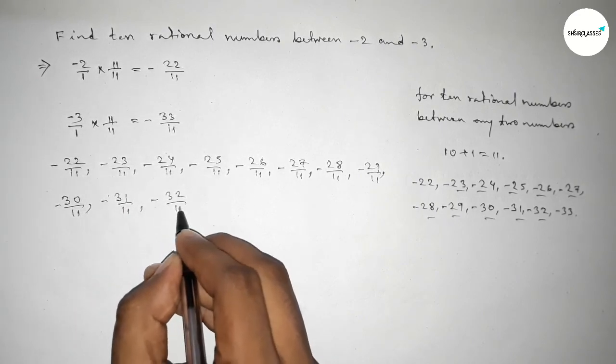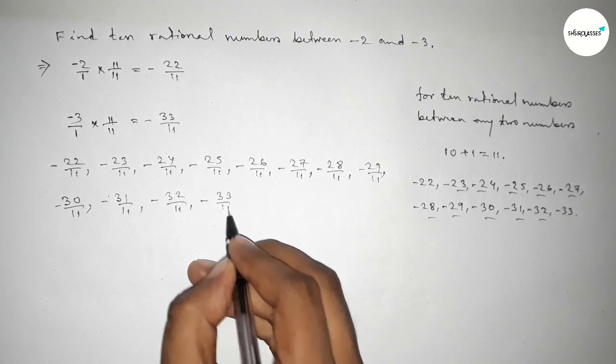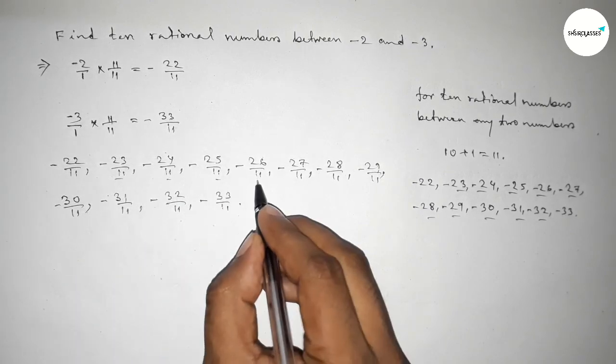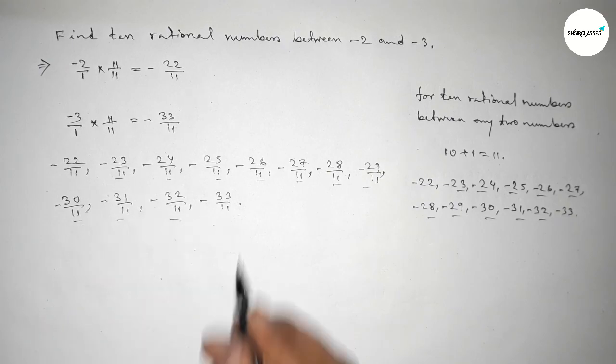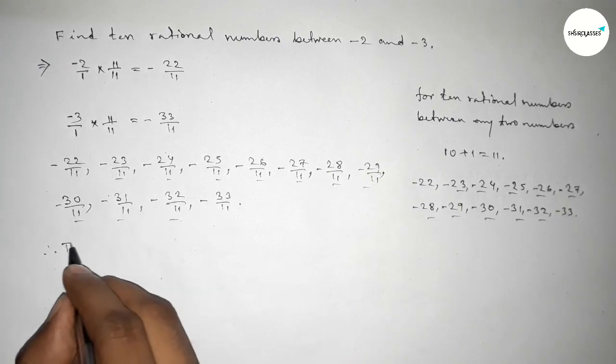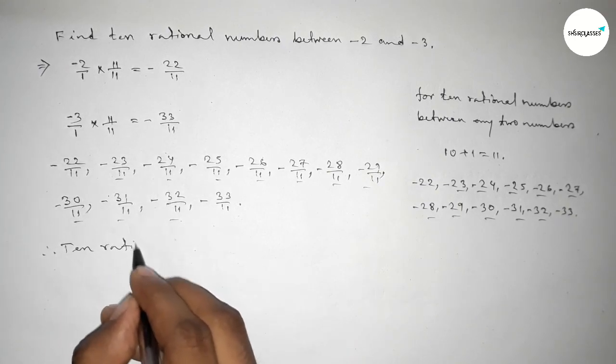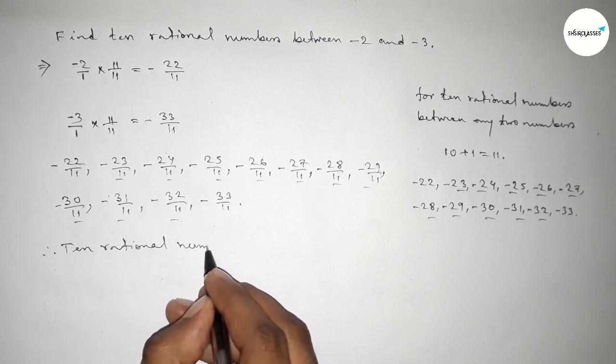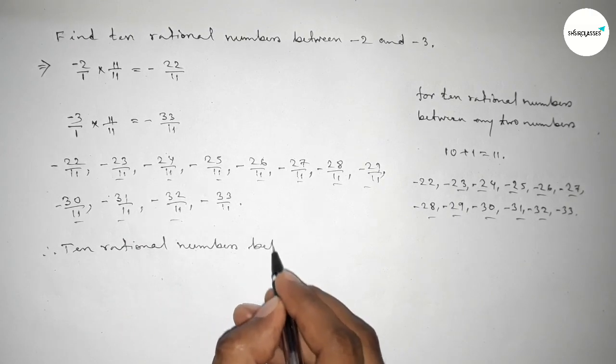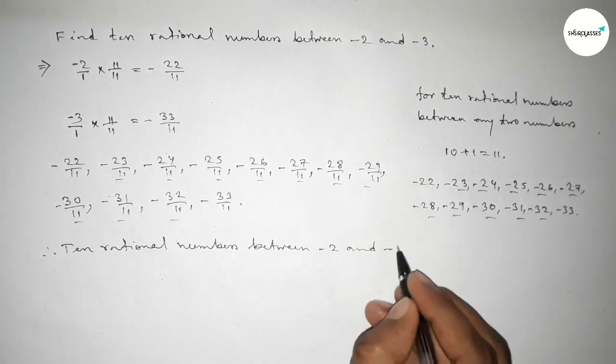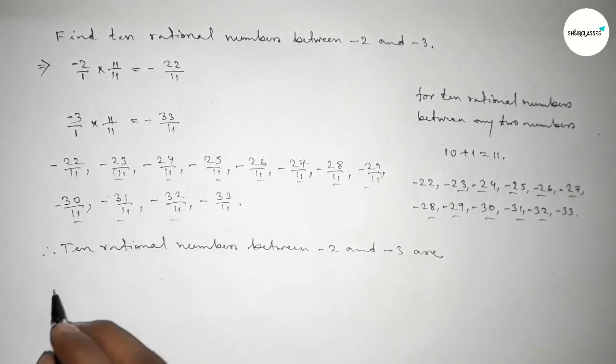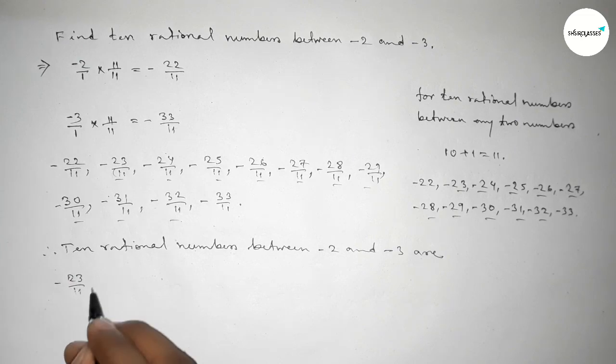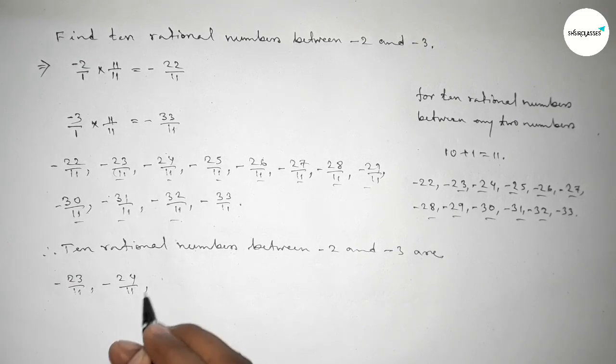So among these, these are the required 10 rational numbers between minus 2 and minus 3. Therefore, the 10 rational numbers between minus 2 and minus 3 are minus 23 over 11, and so on.